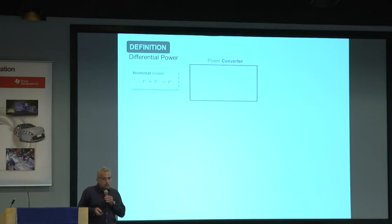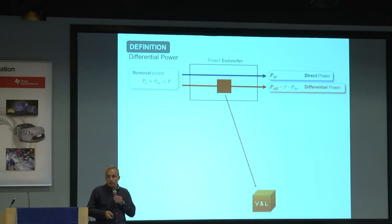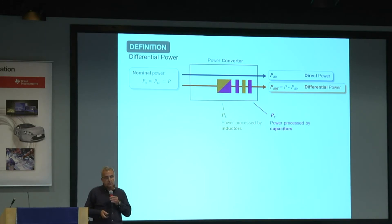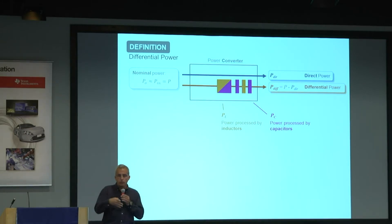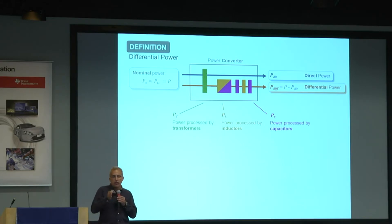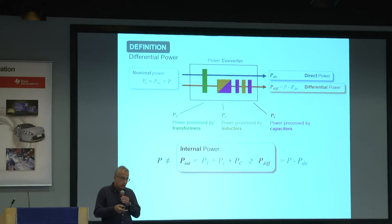For any converter, you can calculate the direct power, then calculate the differential power, and that has an impact on your volume and losses. But in many cases you process more power than that differential minimum. An example is switch capacitors, where you are transferring energy between components, so the internal power processed is higher. In some cases you add a transformer to do the voltage conversion. To account for all the internal power processed, you should add all those terms.